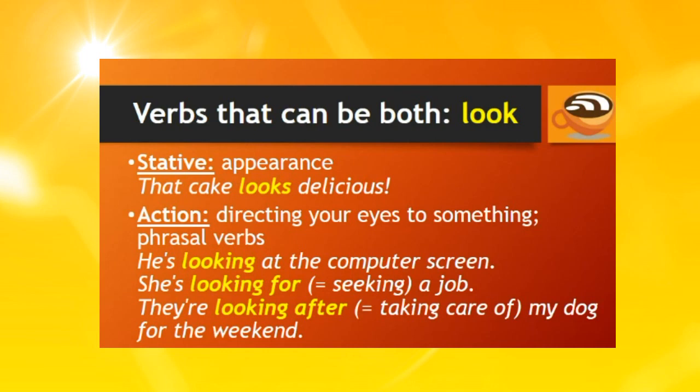Look is another verb that can be both stative and an action. Look is a stative verb when referring to something's appearance — for example, 'that cake looks delicious.' Look is an action verb when talking about directing your eyes to something, or in phrasal verbs. For example, 'he's looking at the computer screen,' meaning directing his eyes there; 'she's looking for a job,' meaning seeking a job; 'they're looking after my dog for the weekend,' meaning taking care of.